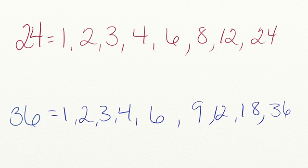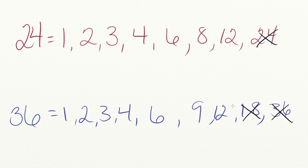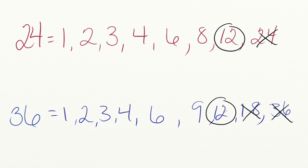Let's go ahead and find the greatest common factor that both numbers share. Neither number shares 36 as a common factor or 24. 36 and 24 do not share 18. So now we move on to 12 — and look at that. 24 and 36 both have a factor of 12, and so that is the greatest common factor that they both share.